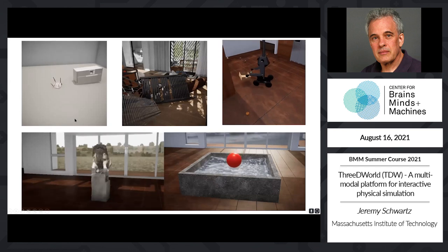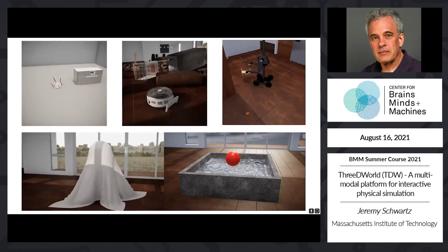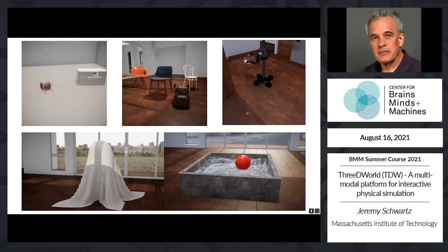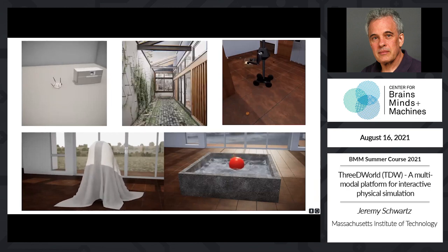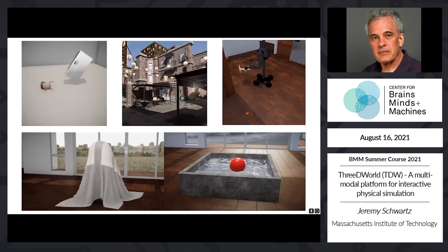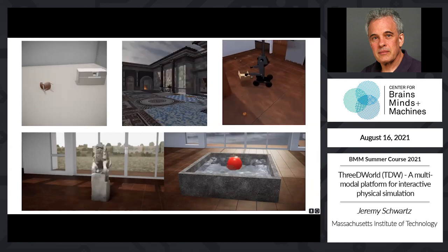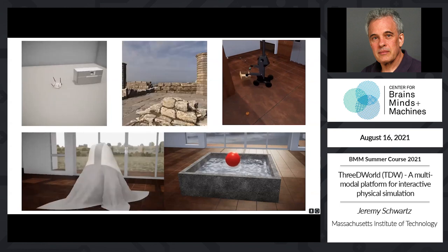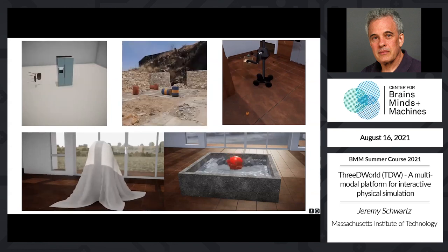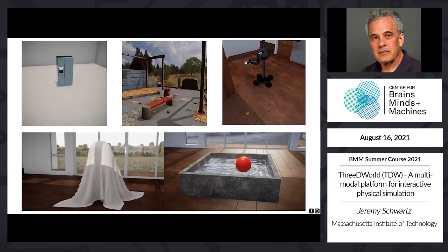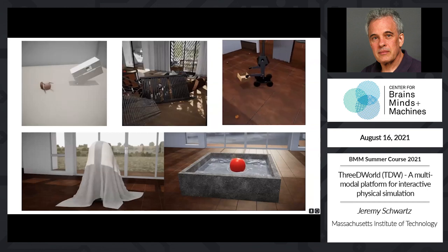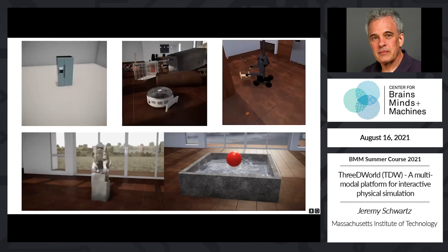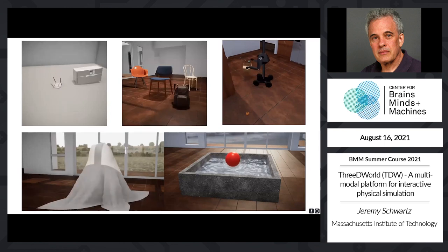As we all know, machine perceptual systems typically require large amounts of labeled data. That data can be laborious to come by and can also be quite expensive. In addition, some quantities such as the mass of an object or the material it's made of can be difficult for human observers to label accurately. So around four years ago we started developing TDW as a way to address this situation. The idea was that by generating scenes in a virtual world we could have complete control over data generation with full access to all associated generative parameters, allowing us to train machine perceptual systems as virtual agents inhabiting the world.